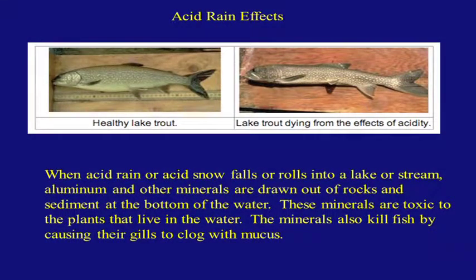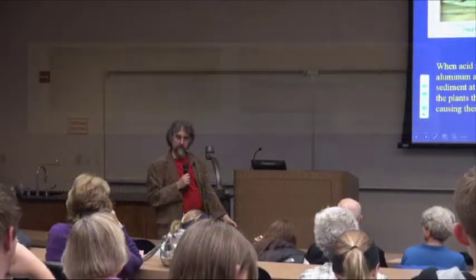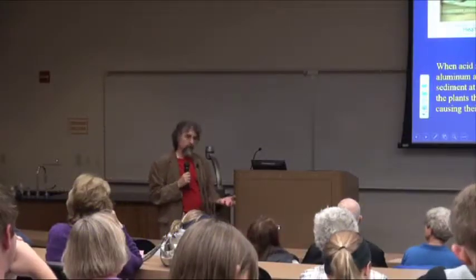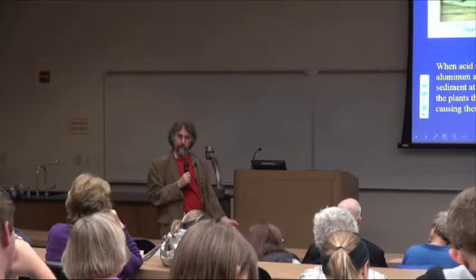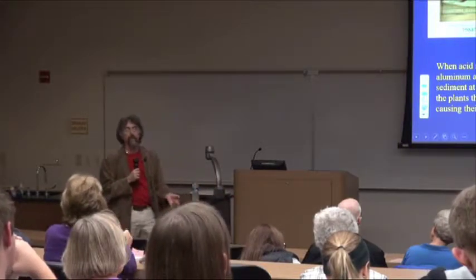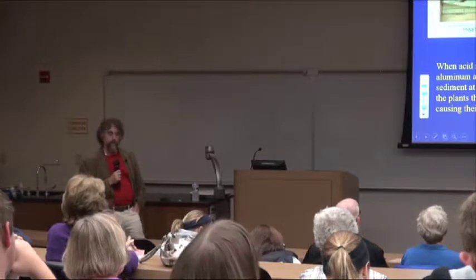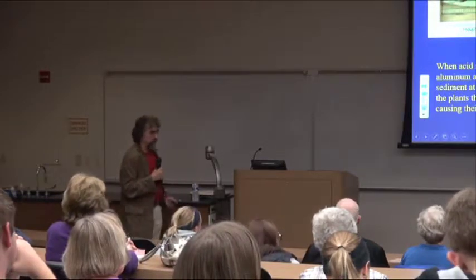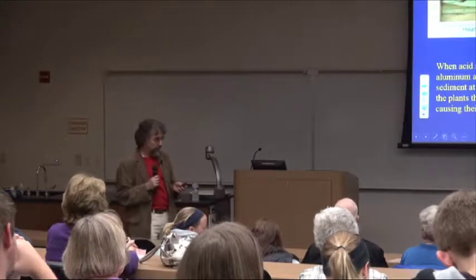Fish are particularly susceptible to acid rain. Interestingly, it's mostly not the acidity of the water itself that harms them — it's that the acidity causes toxic metals and chemicals to leach out of the soils and rocks at the bottom of lakes and rivers, and those toxic things kill the critters. Just another example of the complexity of acid rain.